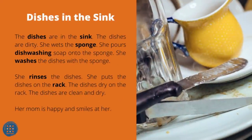Dishes in the Sink. The dishes are in the sink — they are dirty. She wets the sponge and pours dishwashing soap onto it. She washes the dishes with the sponge, rinses them, and puts them on the rack. The dishes dry on the rack. The dishes are clean and dry. Her mom is happy and smiles at her.